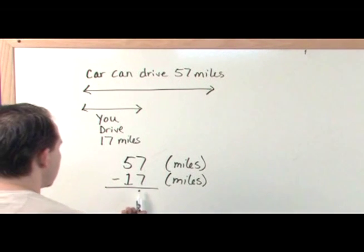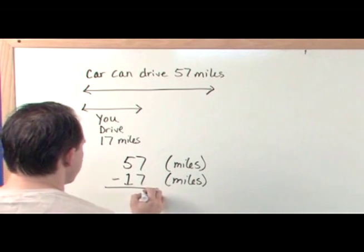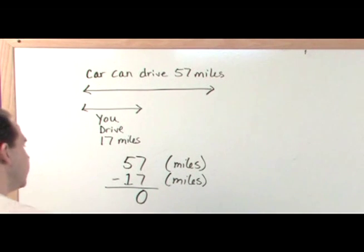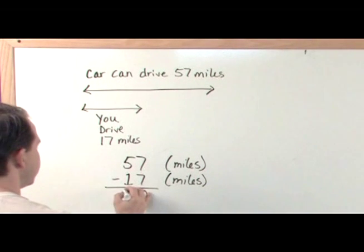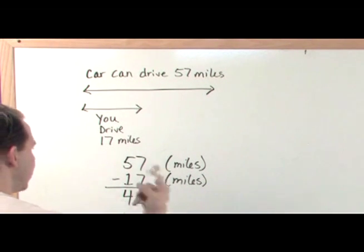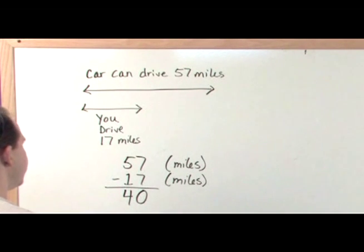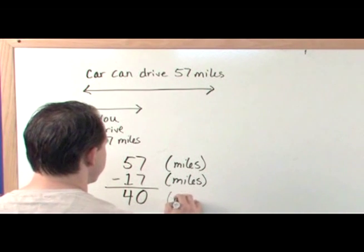So starting in the right-hand column, 7 minus 7, I think you'll all know is 0. 7 subtracts 7 from it, gives you 0. 5 minus 1 gives you 4. Starting at 5 subtracting 1 gives you 4. So you're left with 40 what? 40 miles.